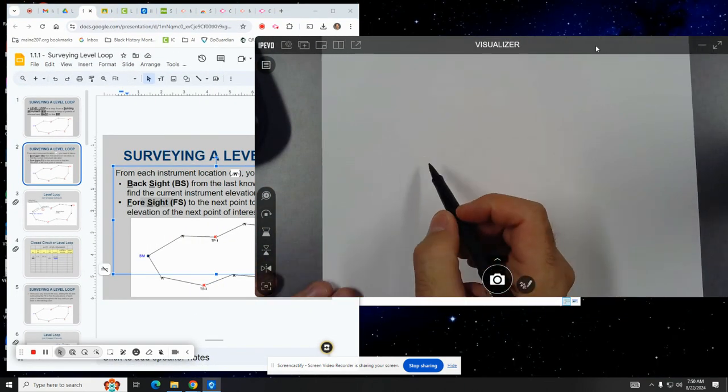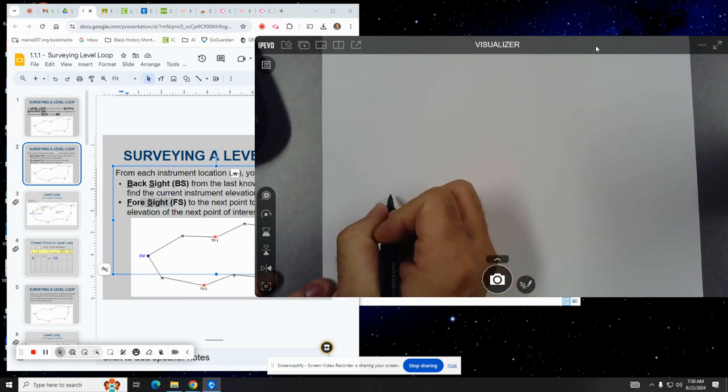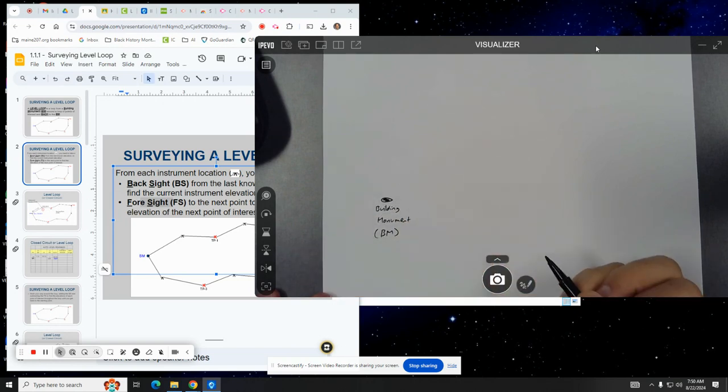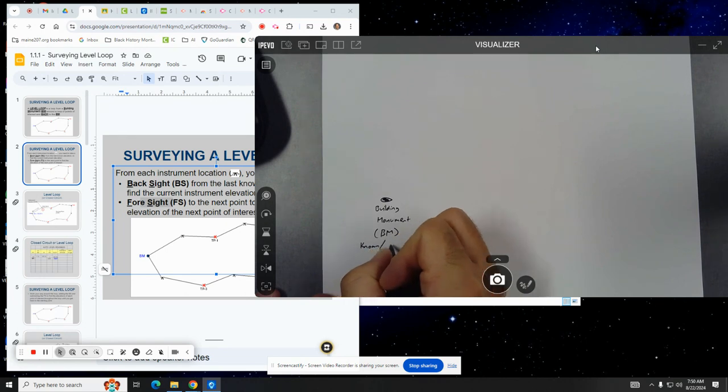So I'm going to draw kind of a sketch of what I mean by that. So when you come out to a construction site, at some location on the construction site there's going to be what's called a building monument, BM for short. And that building monument has a known fixed elevation.